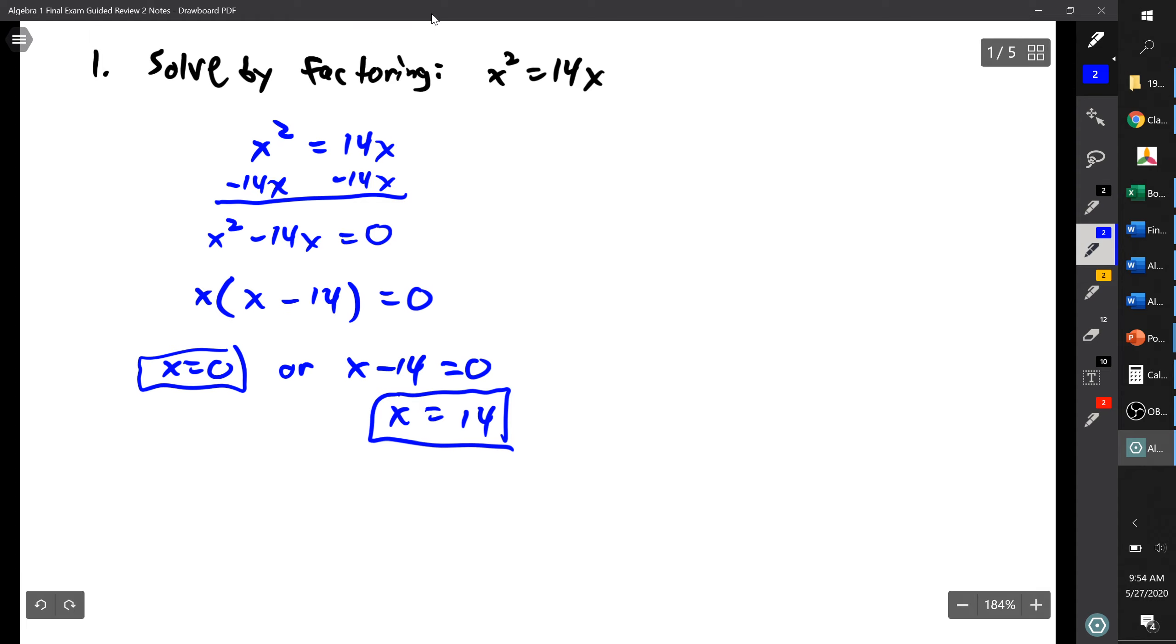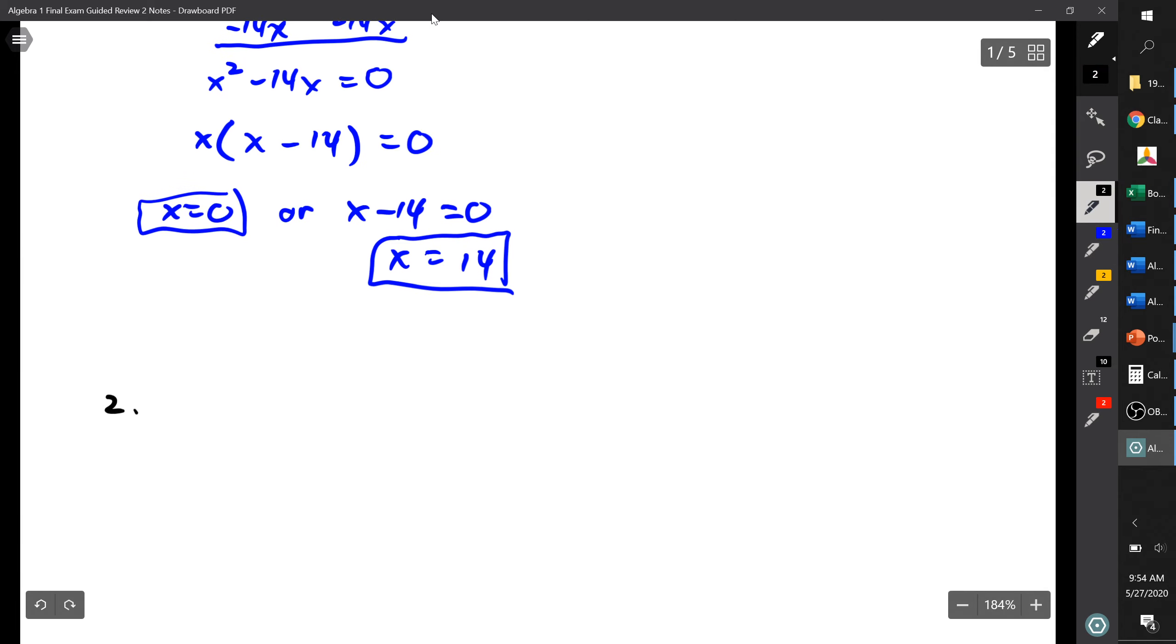If you went back and checked, you would plug in zero to both sides, and zero squared is zero equals 14 times zero, zero does equal zero. And then 14, 14 squared is the same thing as 14 times 14, so both of those check out. All right, that was number one.